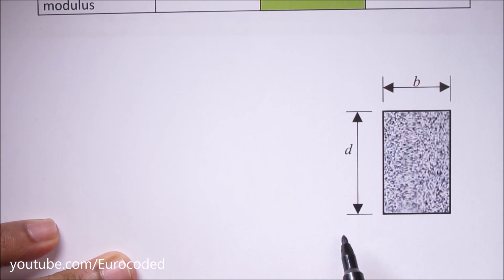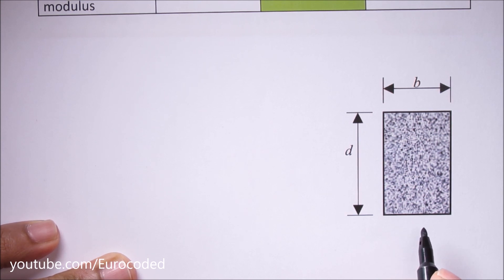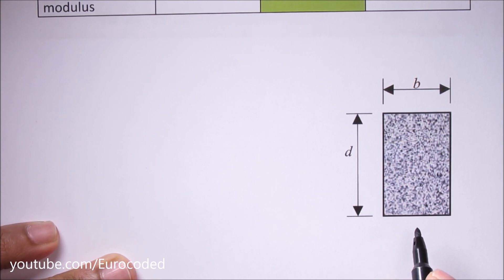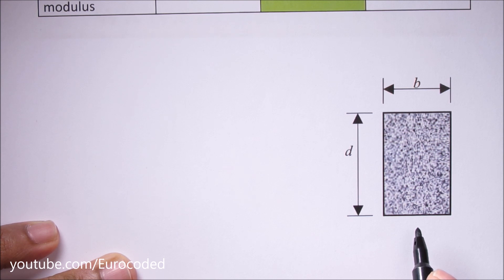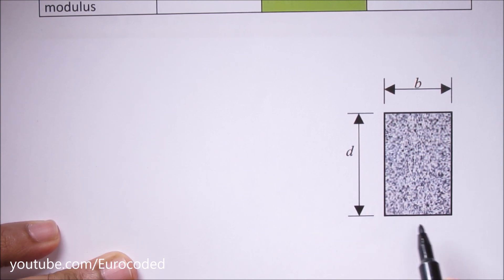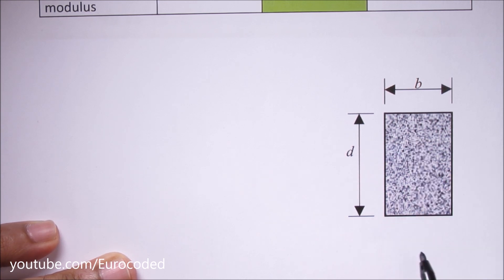Section modulus is simply a geometric property. Most commonly we use section modulus when designing beams or any other flexural members. Because it is a geometric property, section modulus is highly dependent on the shape in question.